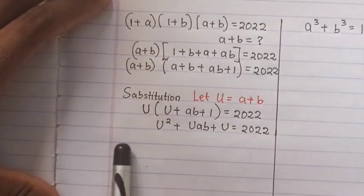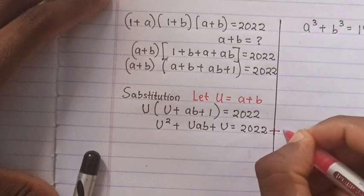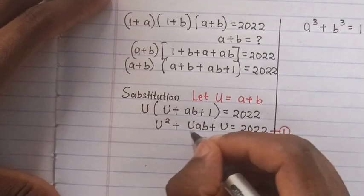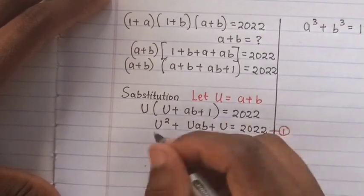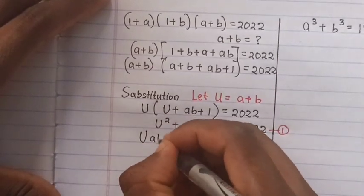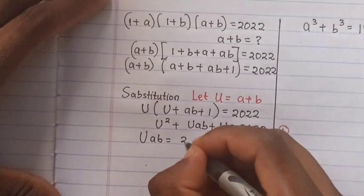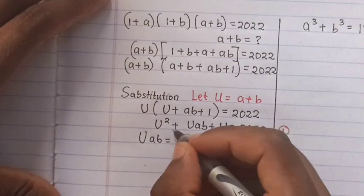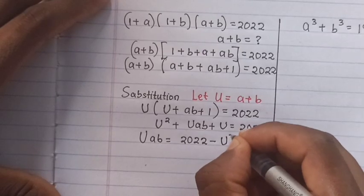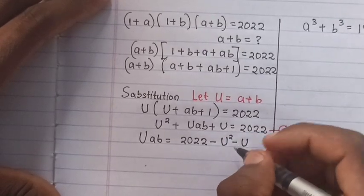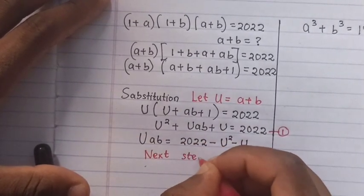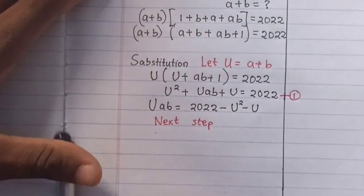We call this equation 1. Then we rearrange: putting u·ab on one side, so u·ab = 222 − u² − u. This is the same as bringing u² and u to the other side, giving us u·ab = 222 − u² − u.